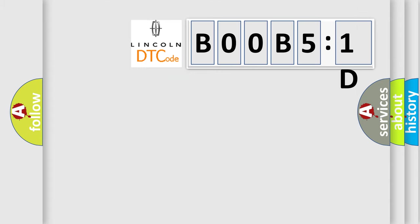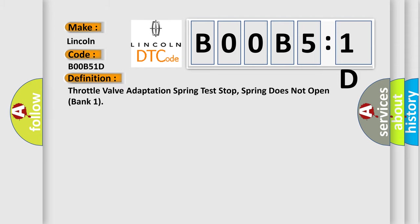So, what does the diagnostic trouble code B00B5:1D interpret specifically for Lincoln car manufacturer? The basic definition is throttle valve adaptation spring test stop, spring does not open bank one. And now this is a short description of this DTC code.